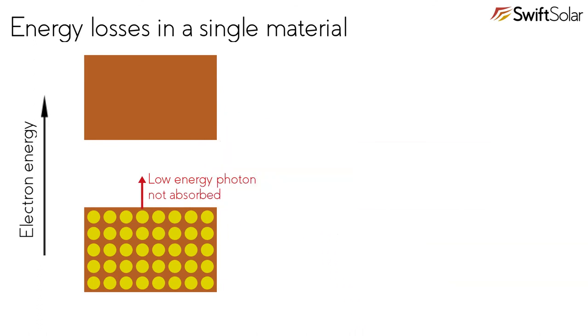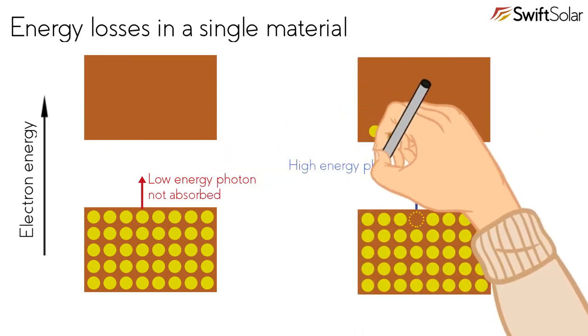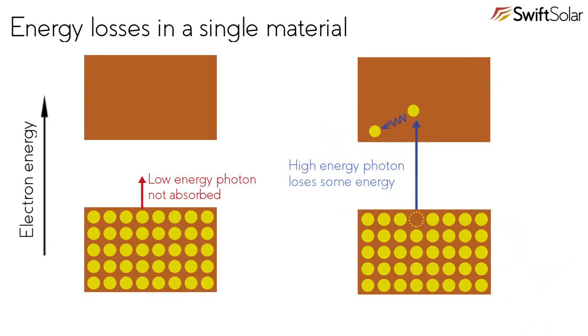Light whose energy is larger than the band gap is absorbed, but the excess energy beyond the band gap is quickly lost as heat and cannot be harvested. These two losses mean that single junction solar cells always waste quite a bit of the energy that they get from sunlight.